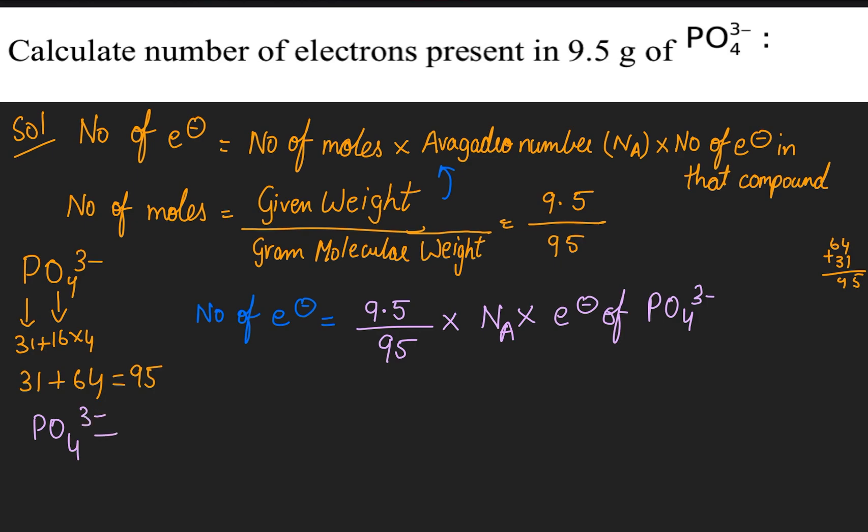For phosphorus, 15 electrons. For oxygen, 4 times 8 equals 32. Plus 3 from the charge equals 50 electrons total.